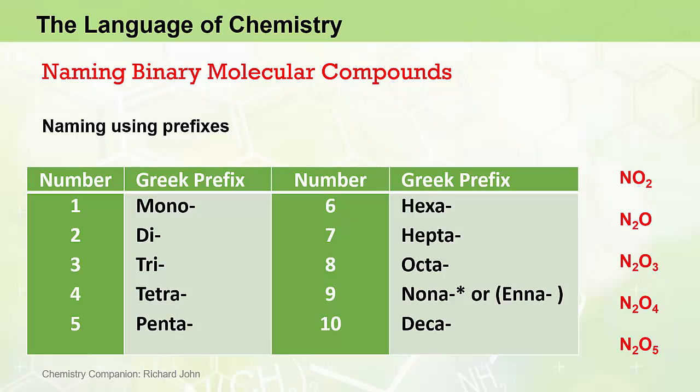The reason we need these prefixes is that there are binary compounds where multiple compounds can be formed between the same two elements. For example, at least five different compounds containing just nitrogen and oxygen can be formed, and we need to be able to name them all by using prefixes to identify the number and type of each atom present.